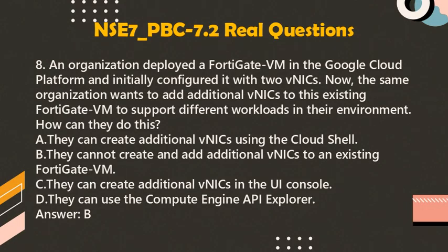Question 8: An organization deployed a FortiGate VM in the Google Cloud platform and initially configured it with 2 VNICs. Now the same organization wants to add additional VNICs to this existing FortiGate VM to support different workloads in their environment. How can they do this? A. They can create additional VNICs using the Cloud Shell. B. They cannot create and add additional VNICs to an existing FortiGate VM. C. They can create additional VNICs in the UI console. D. They can use the Compute Engine API Explorer. Answer: B.